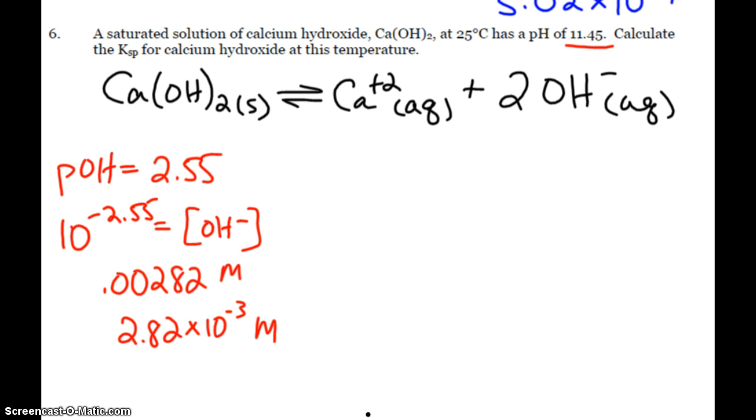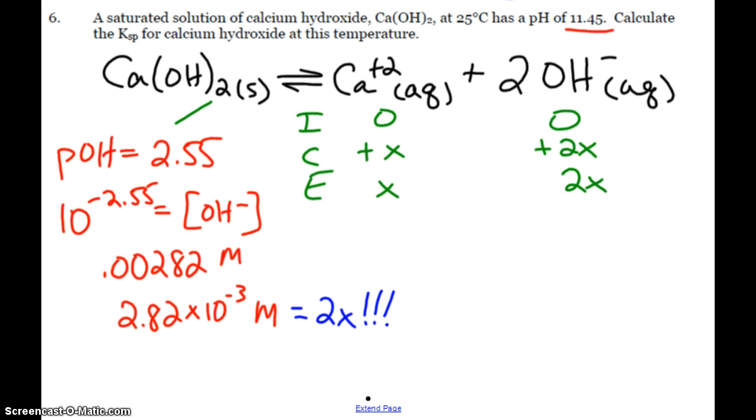But when we're looking at our ICE table, calcium hydroxide doesn't matter. So originally nothing, plus X for calcium, plus 2X for hydroxide. So at equilibrium, hydroxide equals 2X. Alright, so what we just calculated, the 2.82 times 10 to the negative third, that is equal to 2X. So I have to divide that by 2 to get X. So 1.41 times 10 to the negative third equals X.